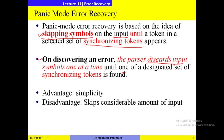On discovery of an error, the parser discards the input symbol one at a time. It first discards one symbol, then checks the predictive parsing table again. If another error occurs, it skips one more symbol. It goes on skipping one symbol at a time until a designated set of synchronizing tokens is found. Once found, parsing resumes. The advantage is simplicity; the drawback is that it skips a considerable amount of input.